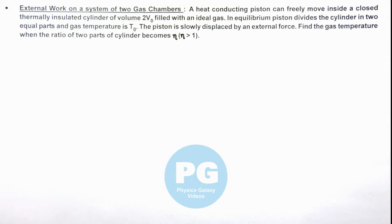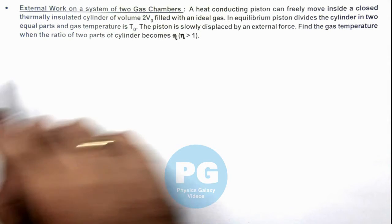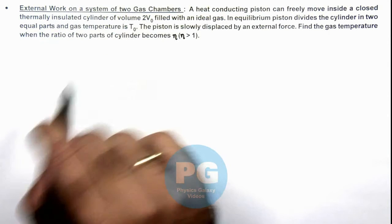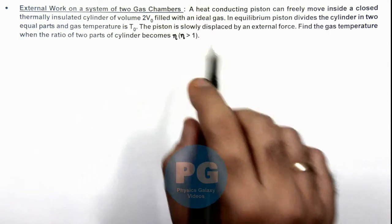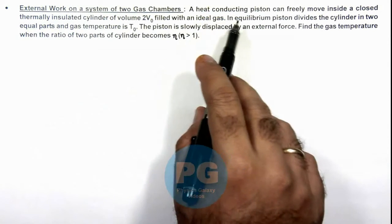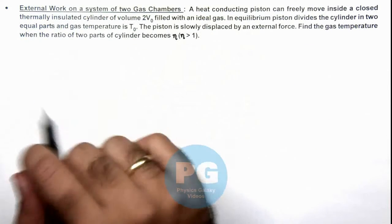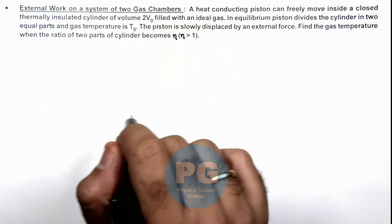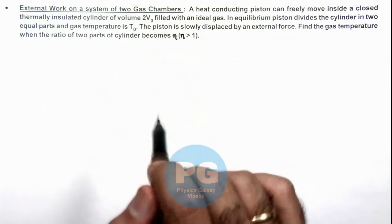In this illustration, we'll analyze the external work on a system of two gas chambers. We are given that a heat conducting piston can freely move inside a closed thermally insulated cylinder of volume 2V₀, which is filled with an ideal gas.